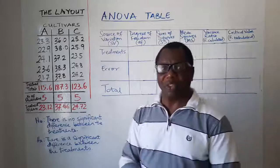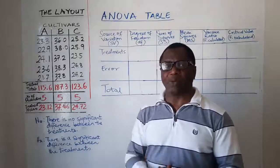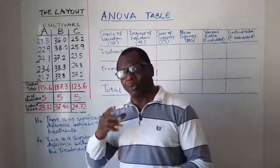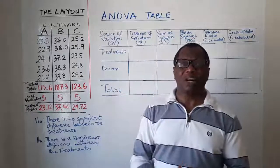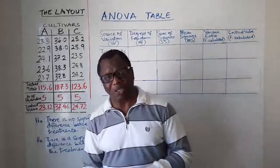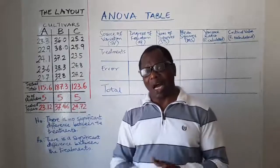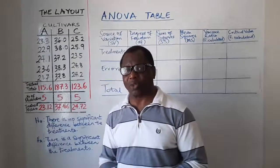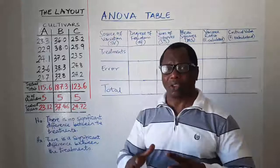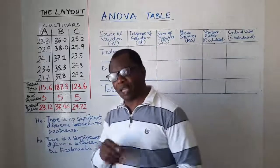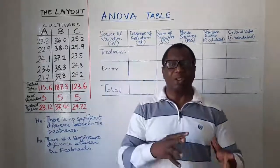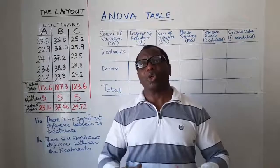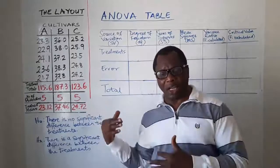In the last video we did some computations. We computed the correction factor, the total sum of squares, the treatment sum of squares, and the error sum of squares. All those things were computed and I told us that all the other computations we need to do will be done in the ANOVA table.